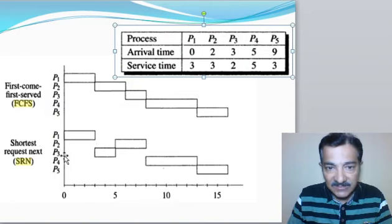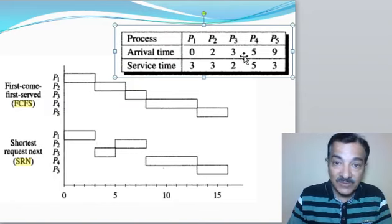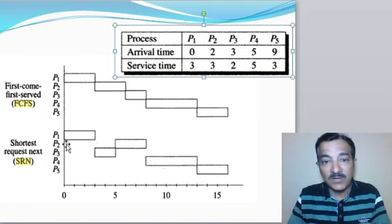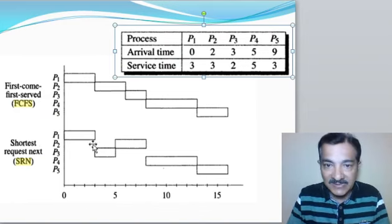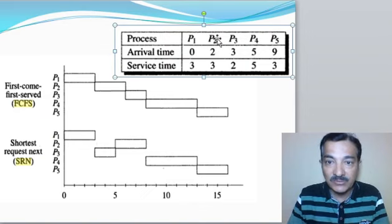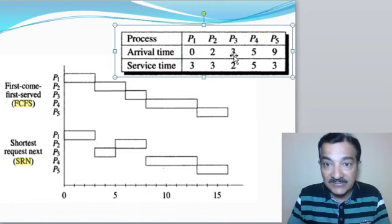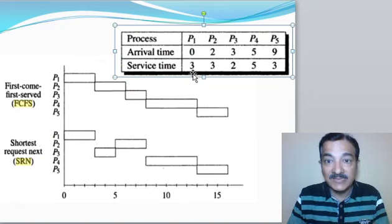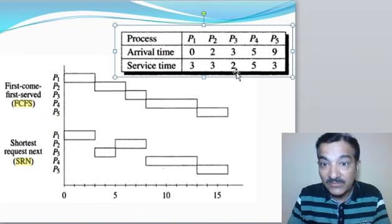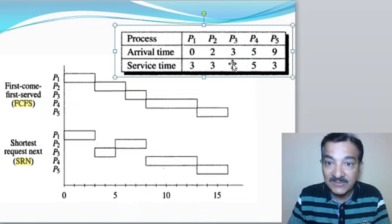Now in shortest request next, only the shortest process executes first. At the 0th second, there is no other process other than process 1, so process 1 goes for execution. Since this is non-preemptive, it executes for the next 3 seconds. Before it completes, process 2 arrives — it is 3 seconds in size. At 3 seconds, process 3 also arrives, which is only 2 seconds. So as process 1 completes at 3 seconds, process 3 has already arrived and is smaller than process 2, so process 3 is given for execution.